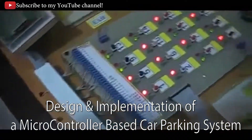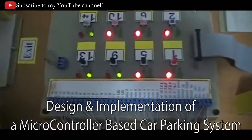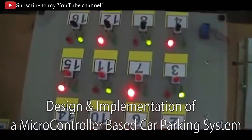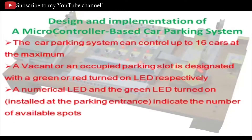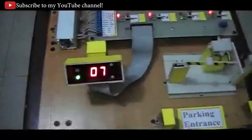Design and Implementation of a Microcontroller-Based Car Parking System. A car parking system can control up to 16 cars at the maximum. A vacant or an occupied parking slot is designated with a green or red turned-on LED respectively. A numerical LED and the green LED turned on indicate the number of available spots. The 7-segment display shows the number of available parking spots on the system.